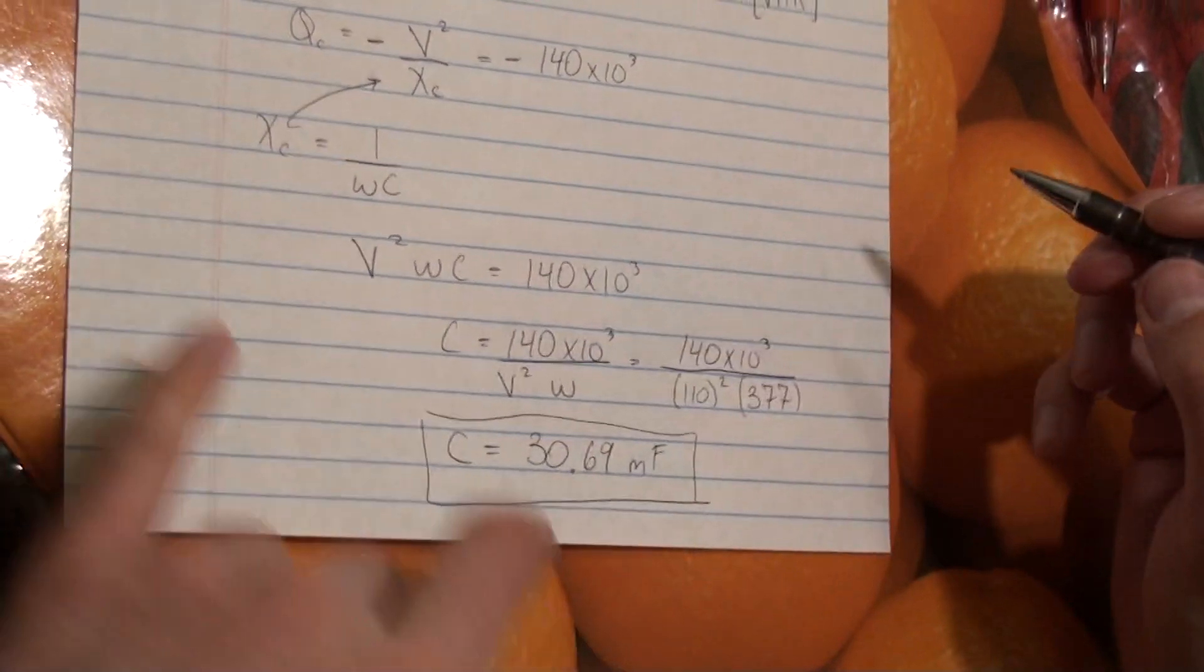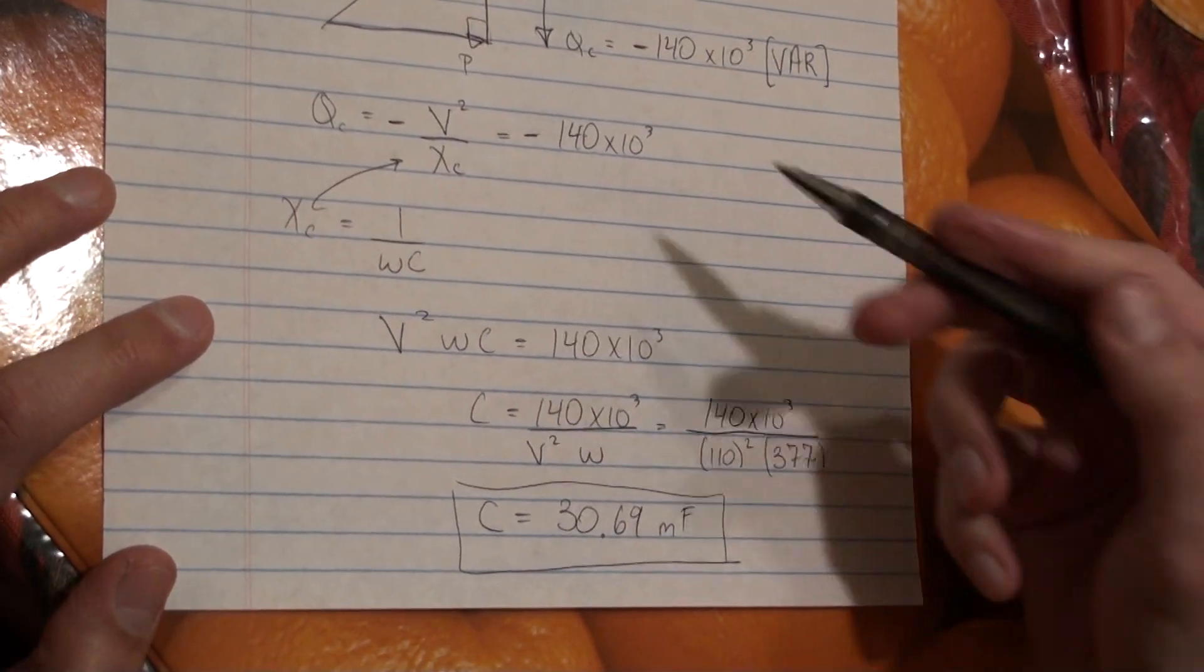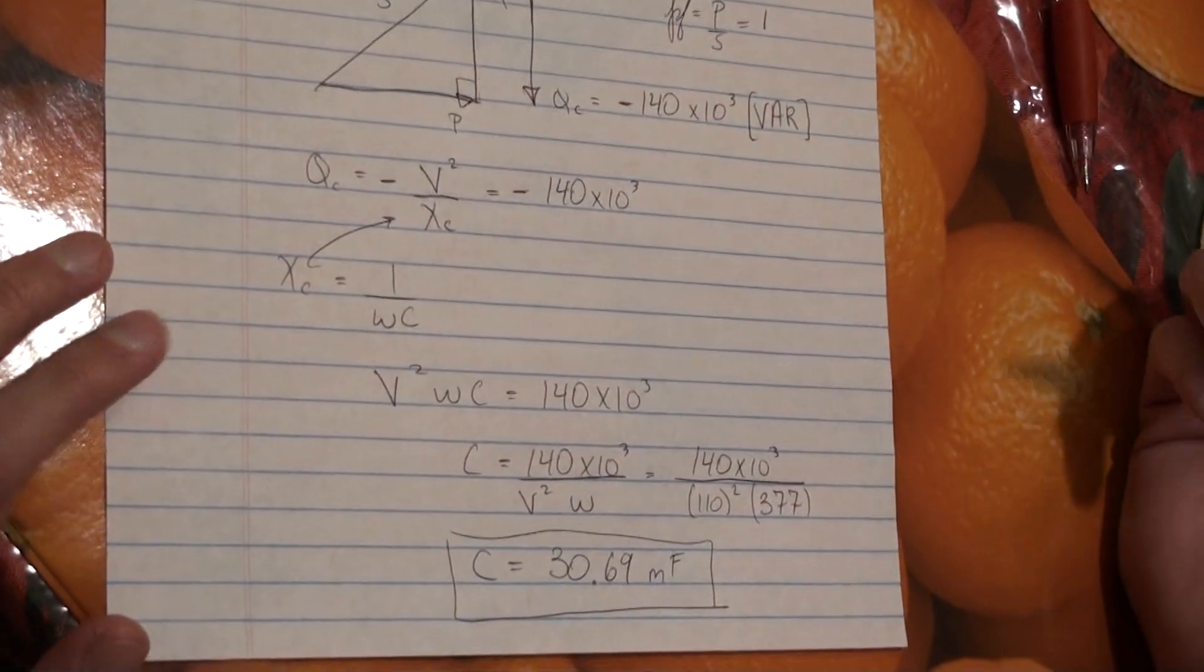And that's the capacitance value, the value of the capacitor, that we need to suppress this completely to get unity power factor.